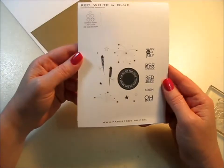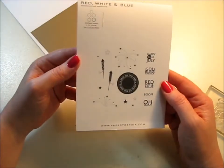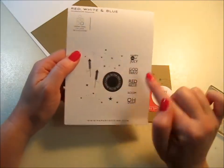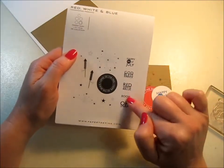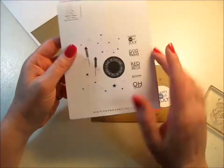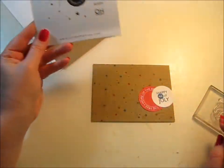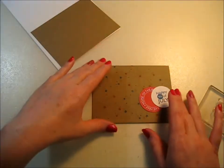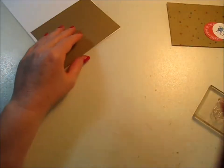So this is from Paper Trey Inc.'s the Red, White and Blue stamp set and it comes with fireworks and stars and rockets and then four different, actually five different sentiments. This is really easy. I just wanted to make another 4th of July card because I have to send them out. So let's go ahead and get started and I'll show you my tricks that I did.